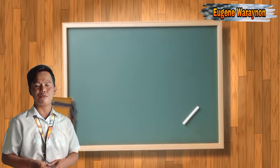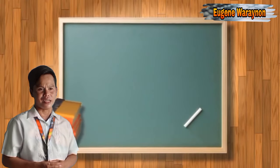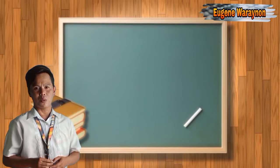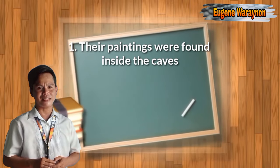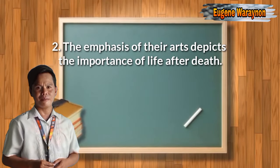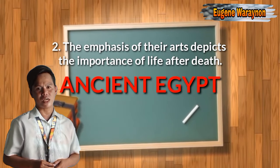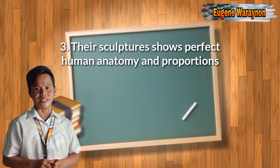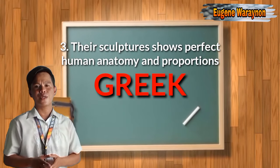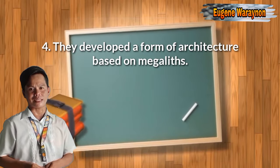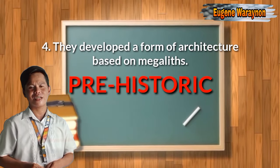Now let's have the post-assessment to test if we have fully understood our lesson for today. Number two: the emphasis of their art depicts the importance of life after death — the answer is Egyptian. Number three: the sculptures show perfect human anatomy and proportions — the answer is Greek classical. Number four: they developed a form of architecture based on megaliths — the answer is prehistoric.